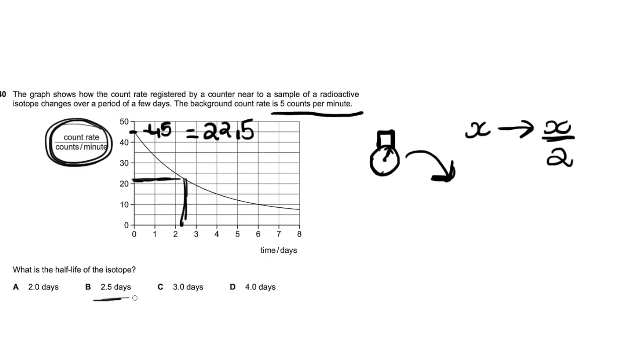And that's because the background count rate is sort of contaminating the readings. It's providing a source of error. If you have the sample right here emitting radiation, the count rate detector—let's just say a geiger counter—and it's emitting radiation, the value that the geiger counter registers is 45 because you also have some extra radiation sneaking in.